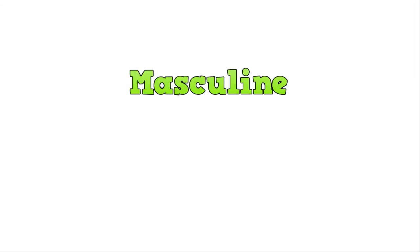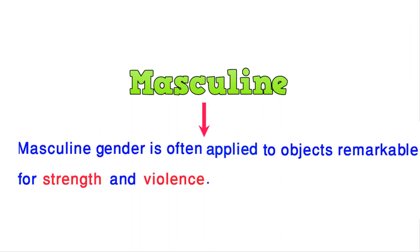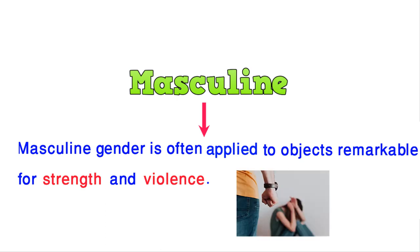Let's talk about masculine gender. Masculine gender is often applied to objects remarkable for strength and violence. You have seen on television that it is often seen as dominant and violence is created. So masculine gender is known for strength and violence.